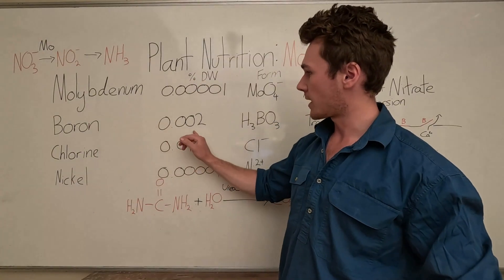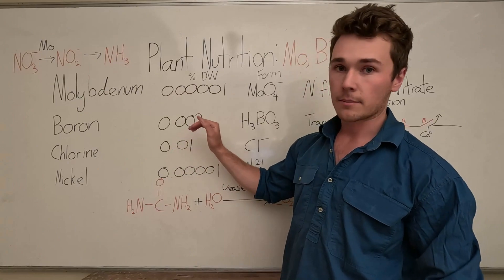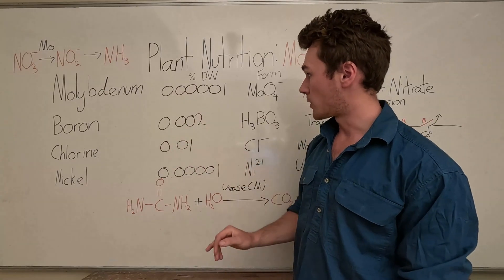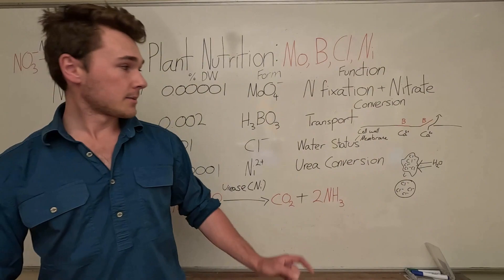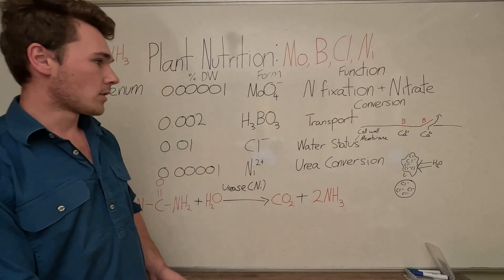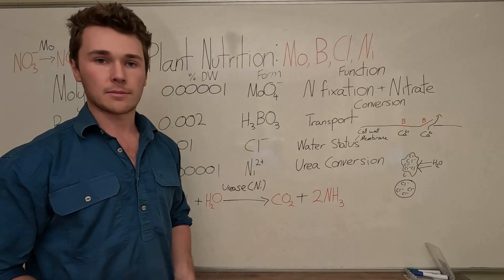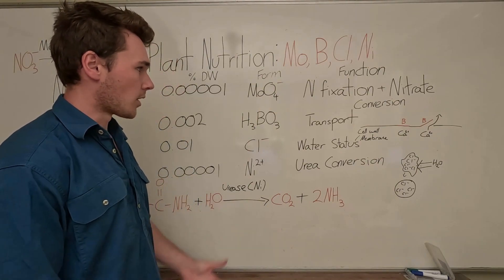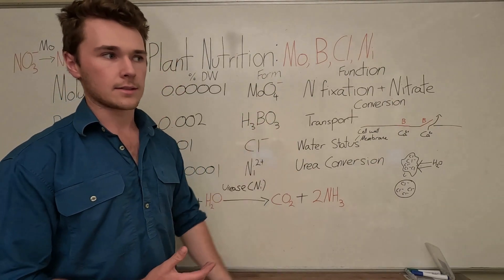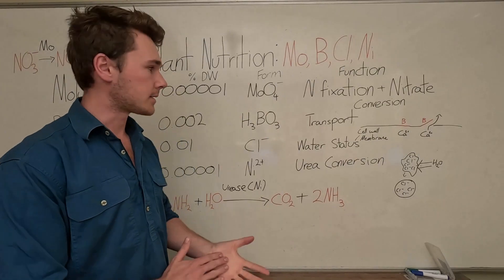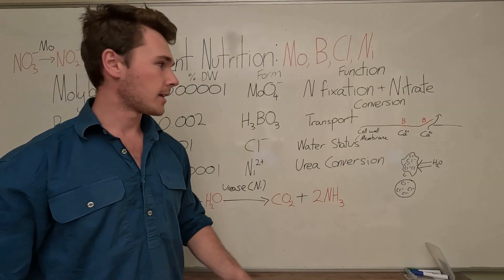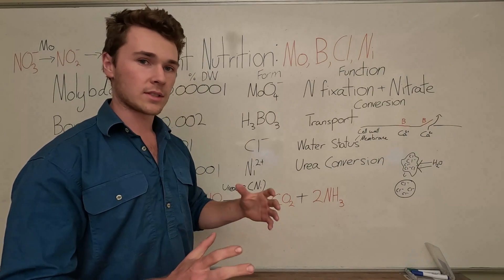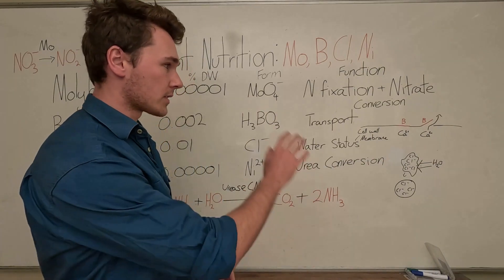Next we have boron. Boron is actually using a decent amount for a micro: 0.002 percent. It's absorbed as boric acid. Now there's not that much research done on boron. It's probably the least understood of our plant nutrients, and no one even knows how it's absorbed by the plant. Not many people know about it.